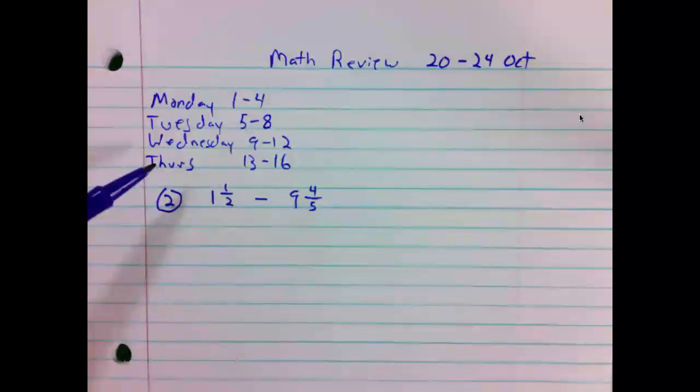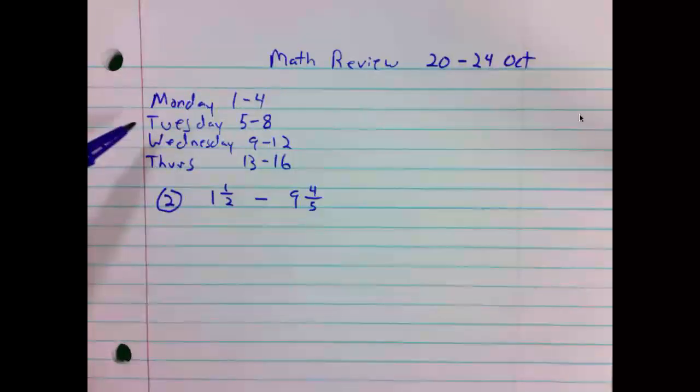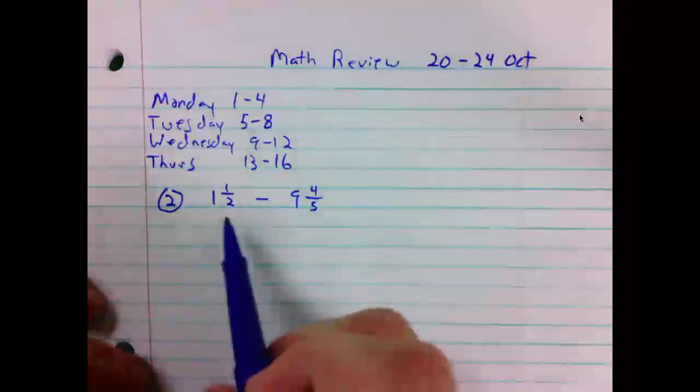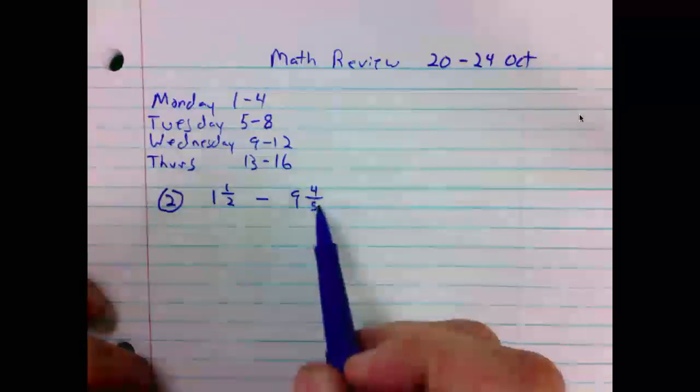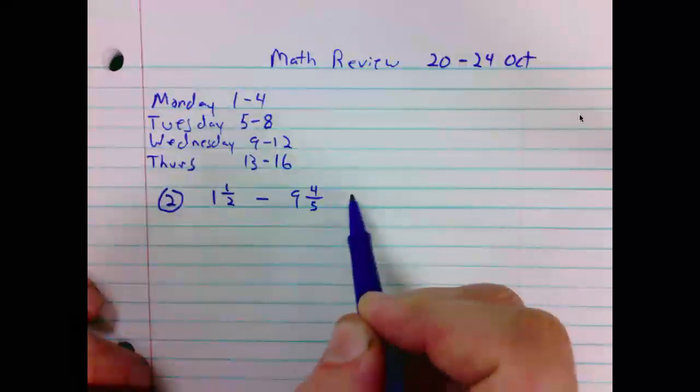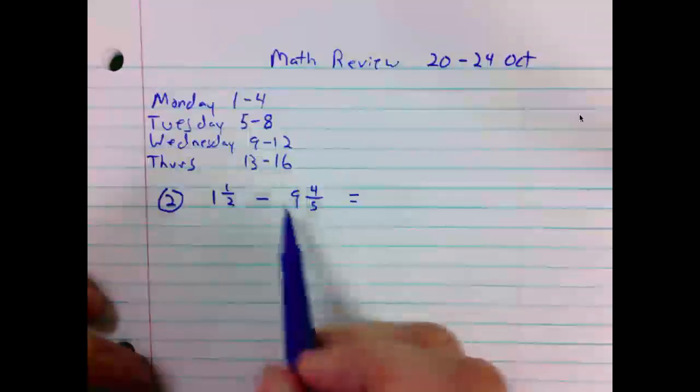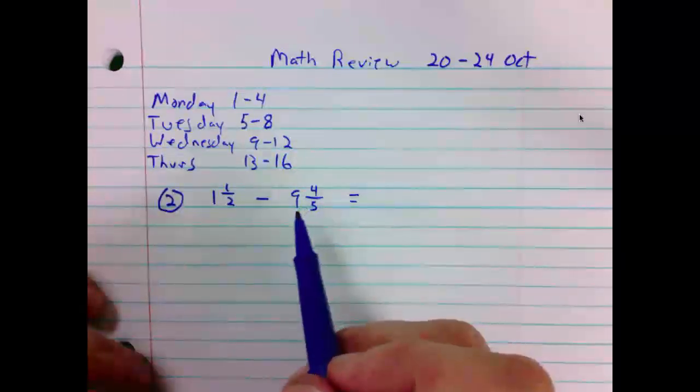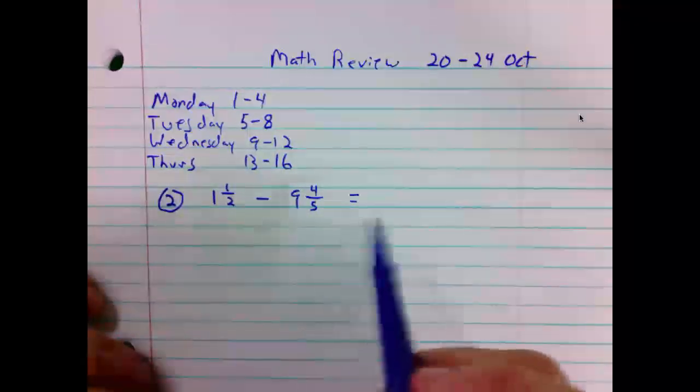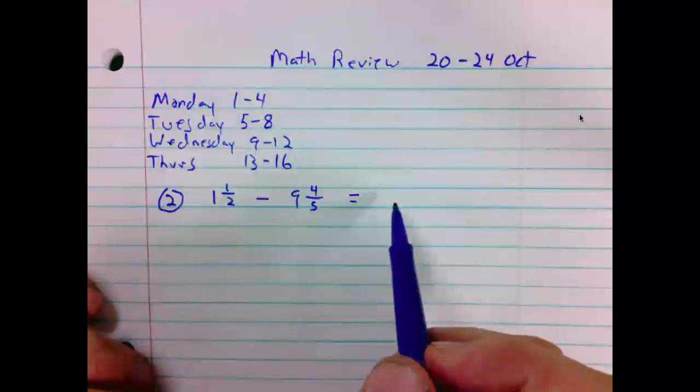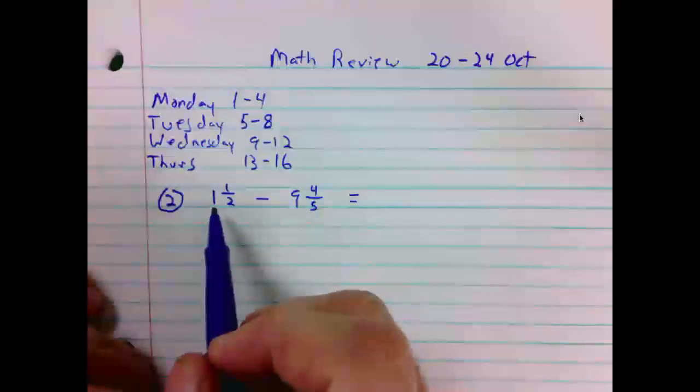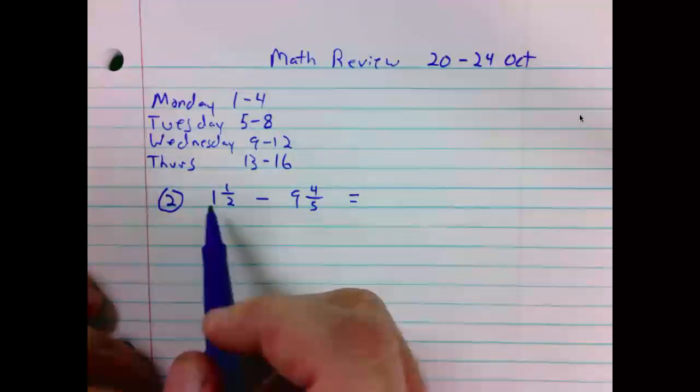We will look at Monday and Tuesday problems in this video. First problem number 2, 1 and a half minus 9 and 4 fifths. First we notice that the larger number is being subtracted, so we should expect that our difference will be negative. Converting both mixed numbers to improper fractions.